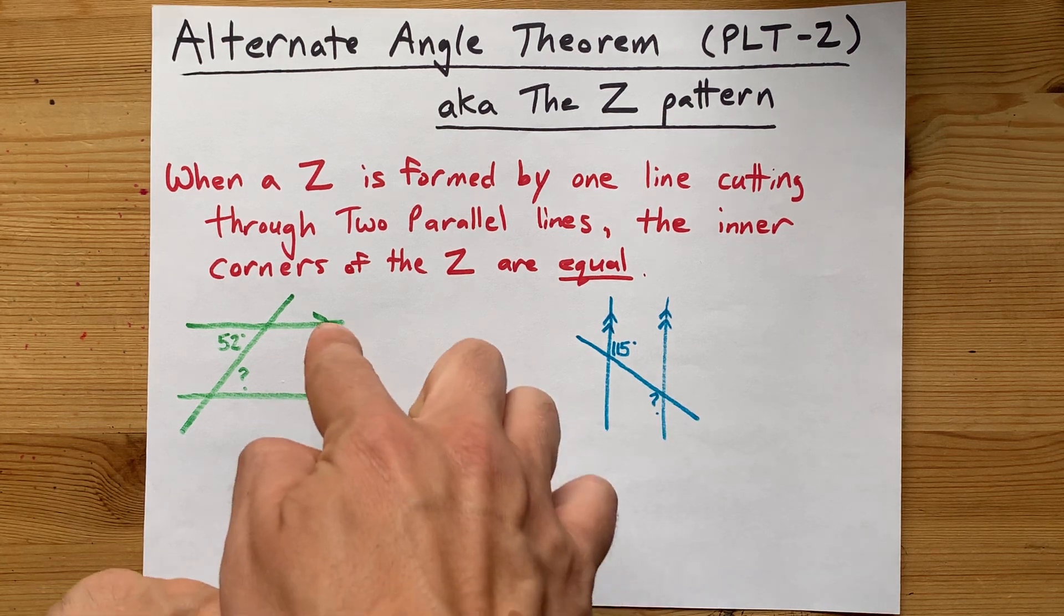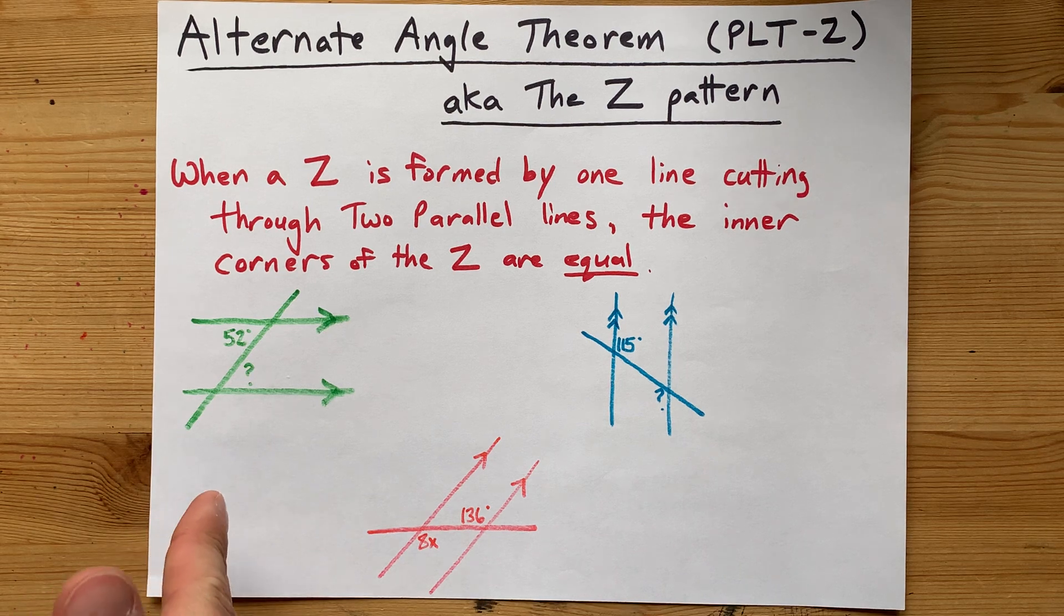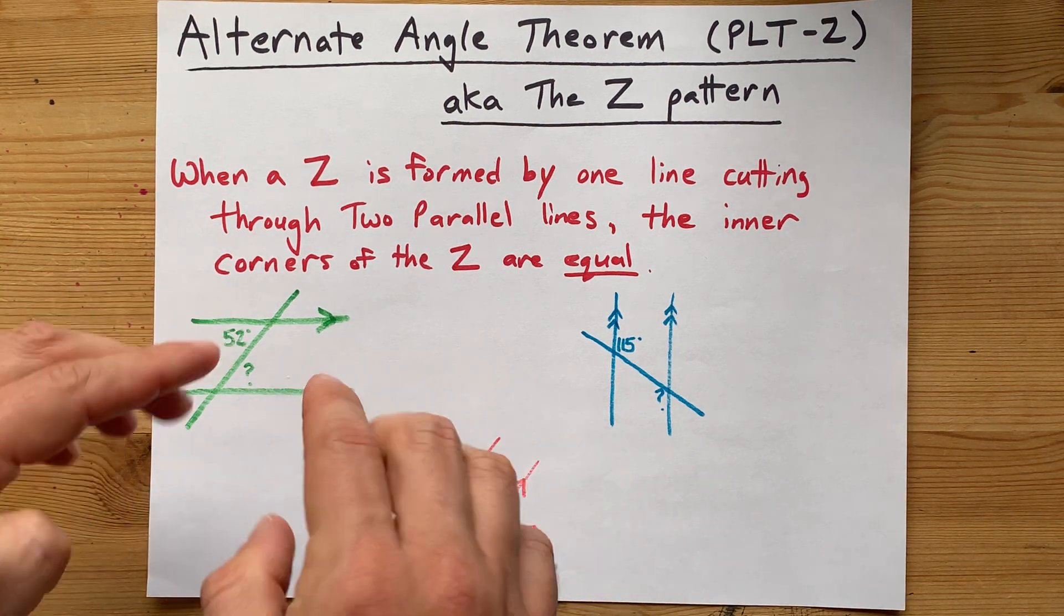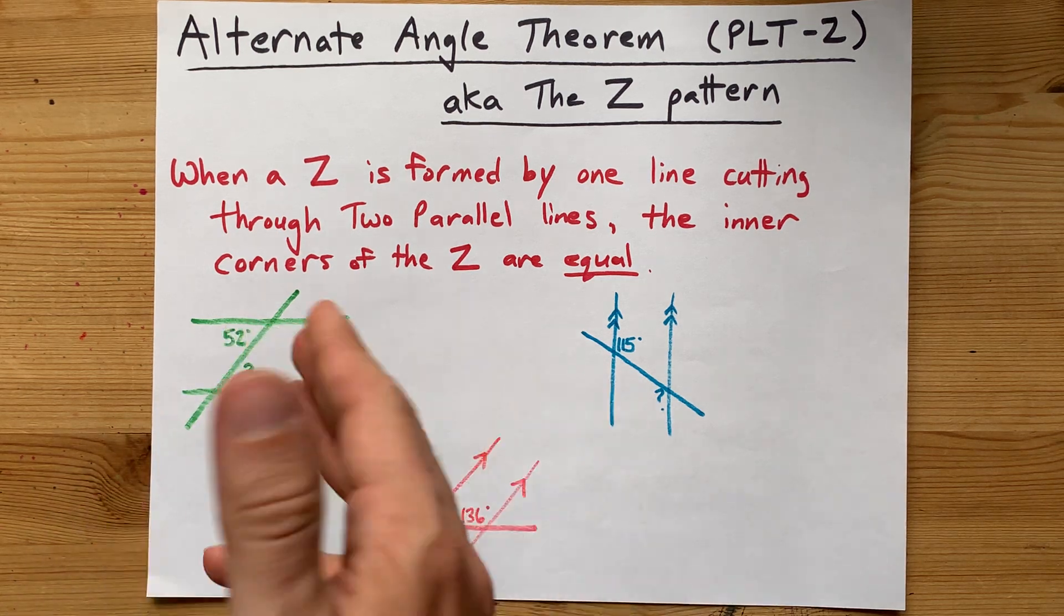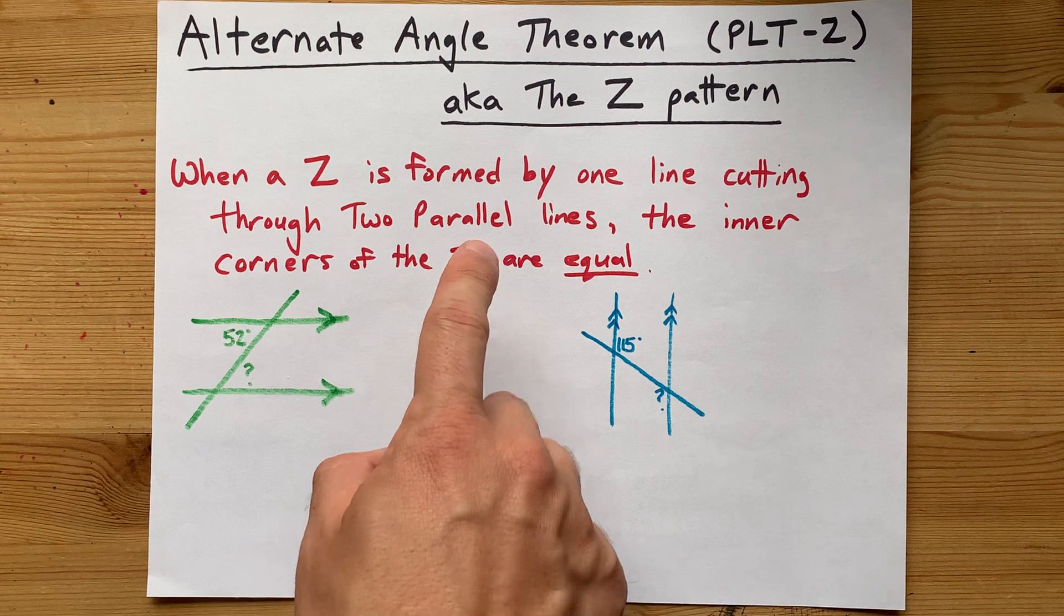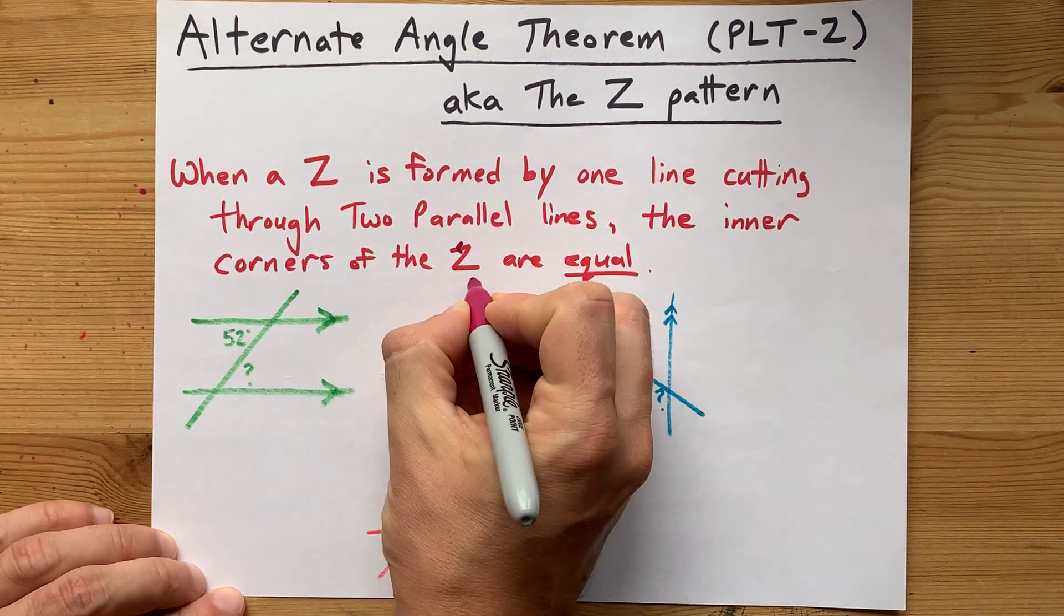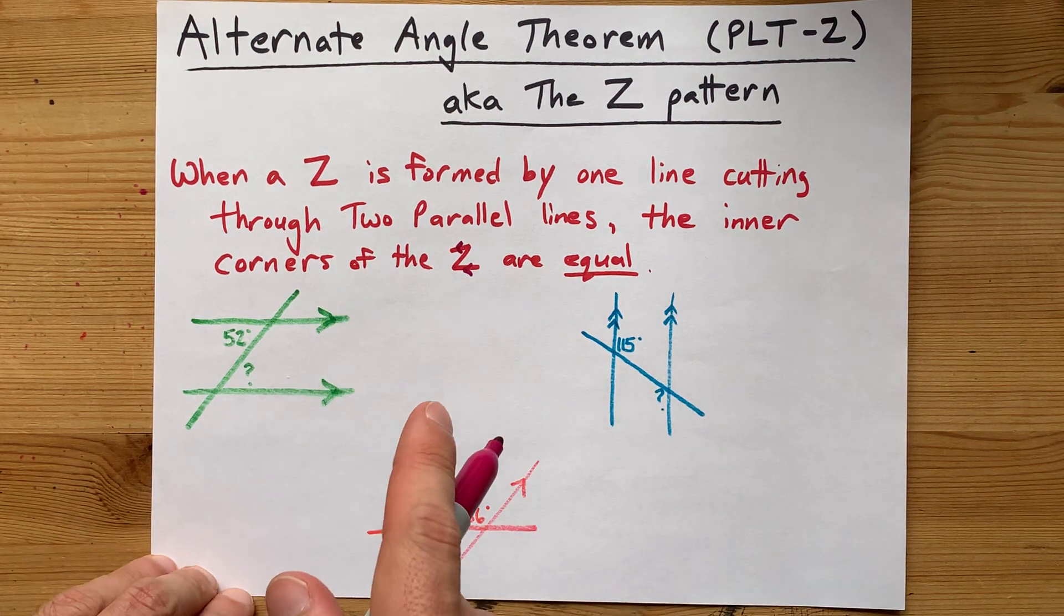is the idea that when you have two parallel lines and then another line cutting through it, the inner corners of a Z that is made, those angles are going to be equal to each other. However, the trick here is that for the Z, the top and bottom of the Z have to be the parallel lines.